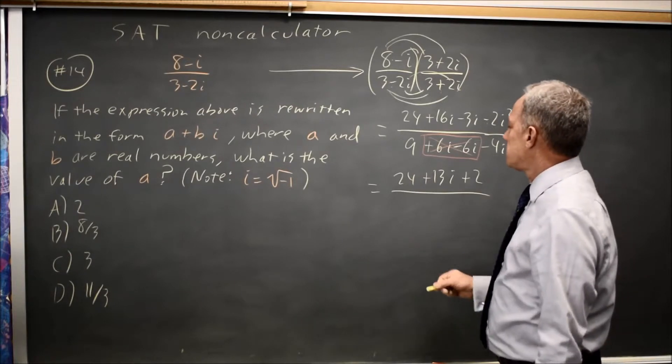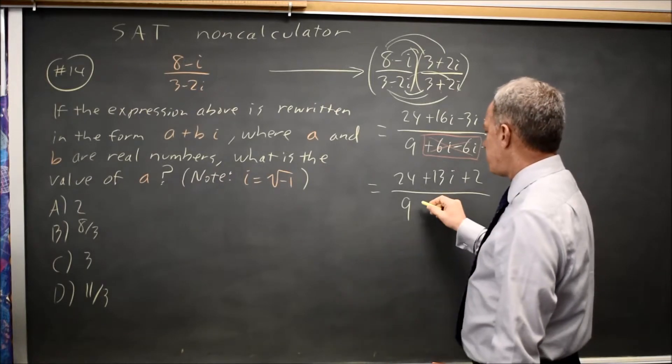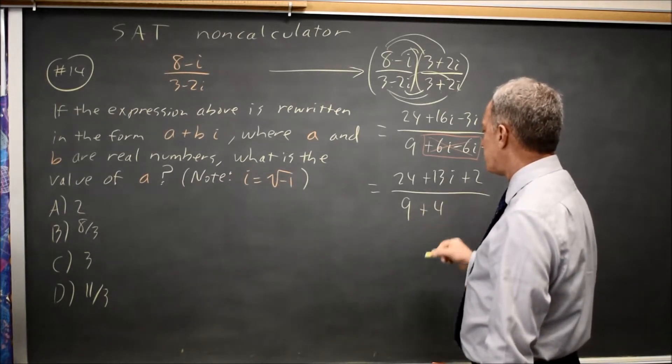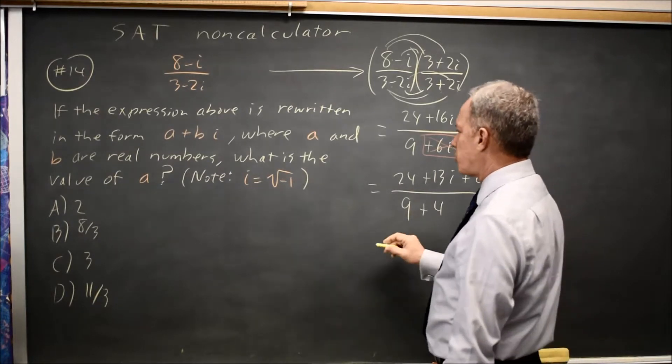My denominator is 9, and then negative 4 times i squared is negative 4 times negative 1, which is positive 4. So that's a denominator of 13.